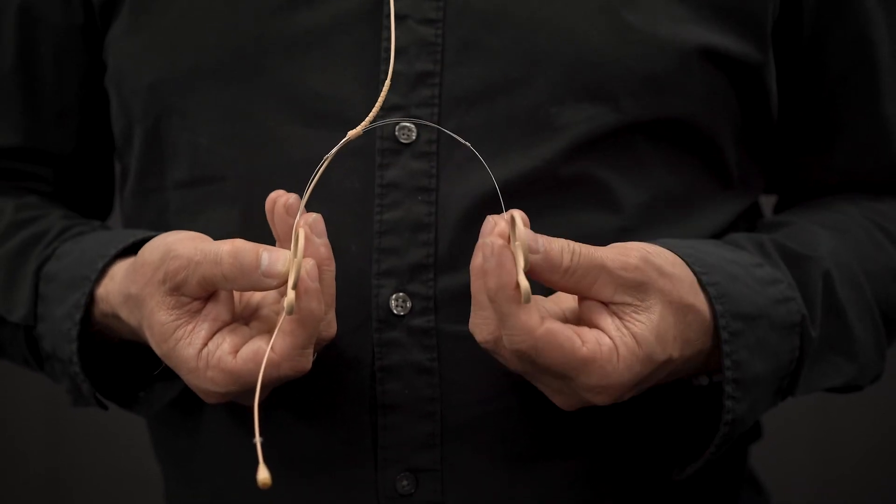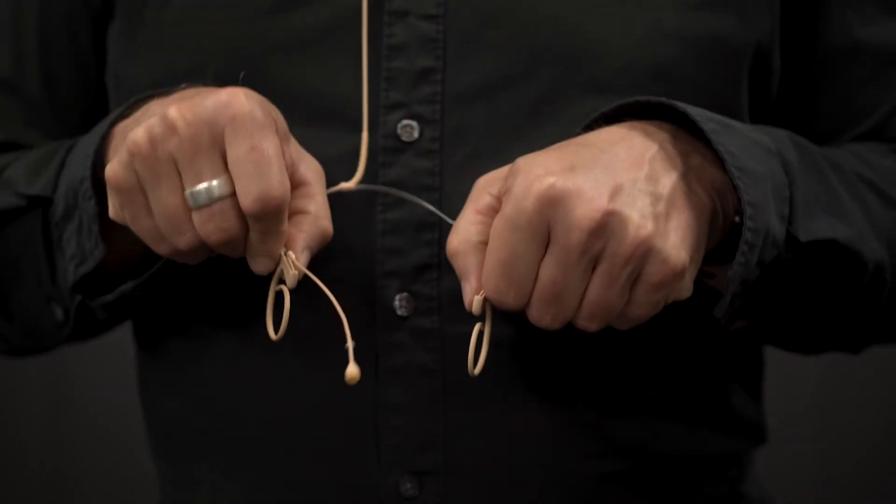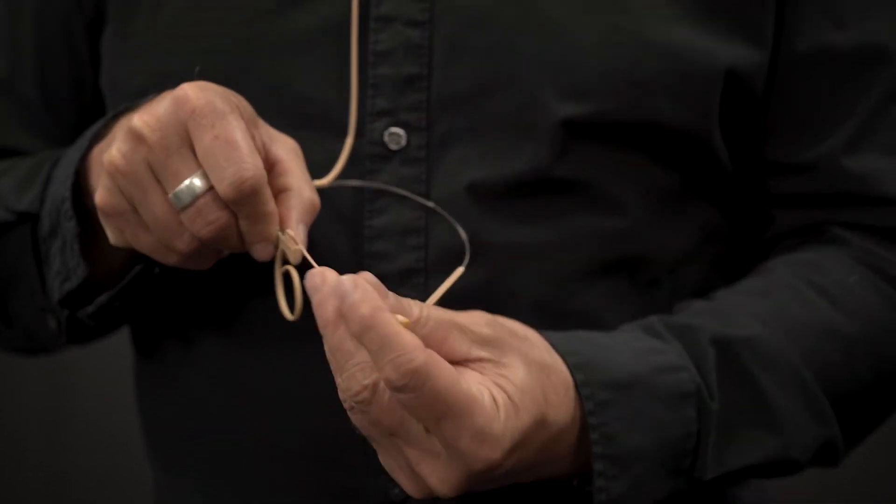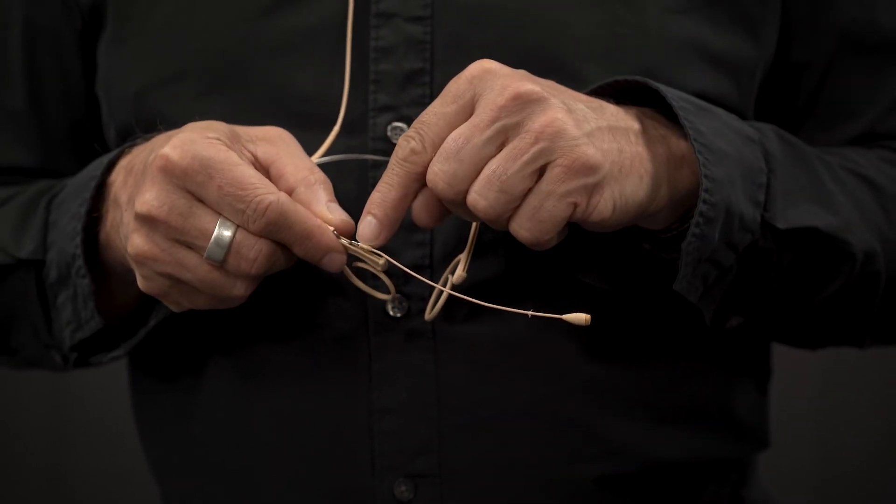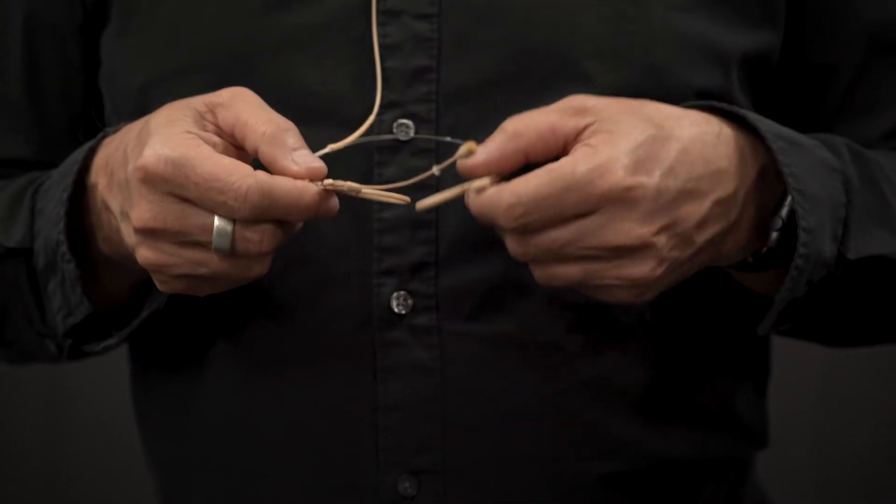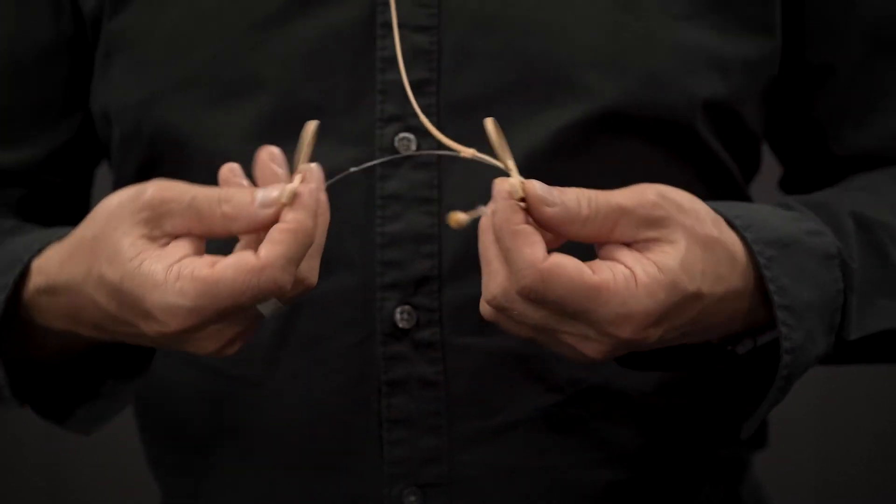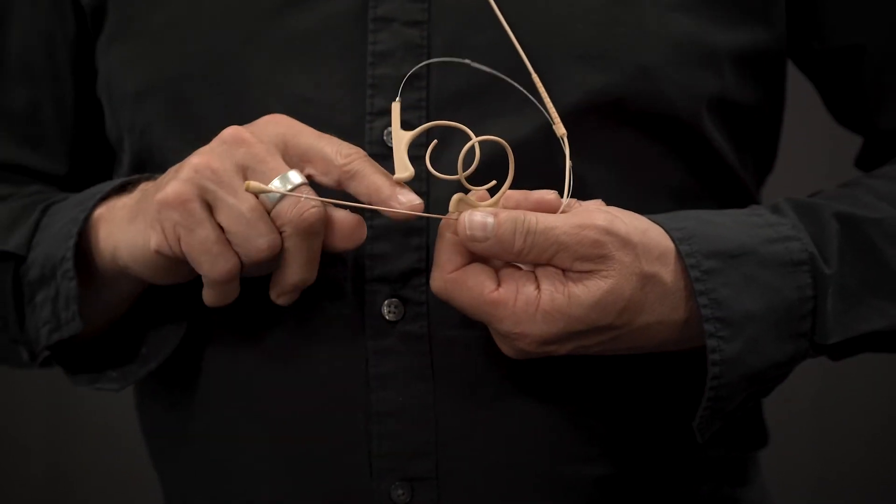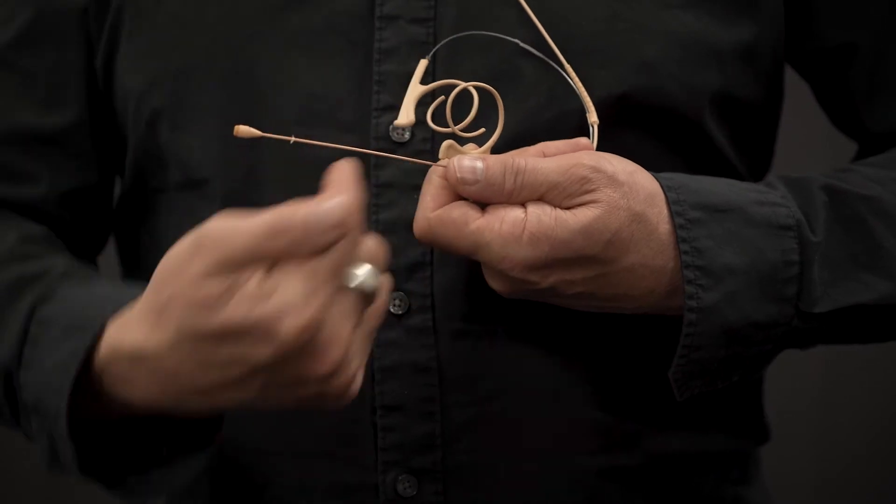If you wish to change the position of the microphone from one side to the other, you simply flip the headset and twist the microphone boom by rotating it in this little part here. Mind you, what was downwards bent before is now upwards. You have to readjust the bend when shifting to the other side.